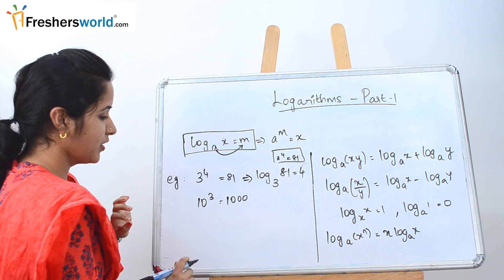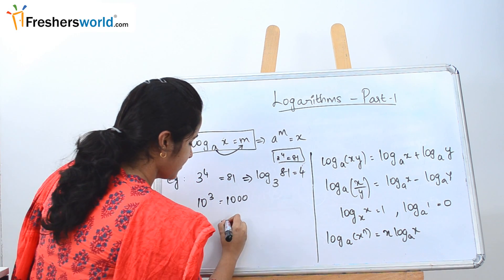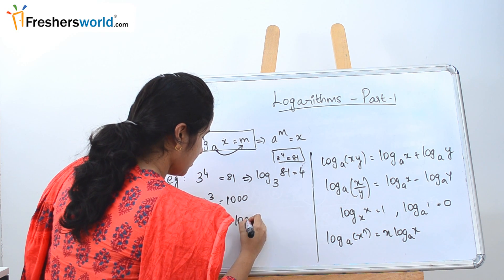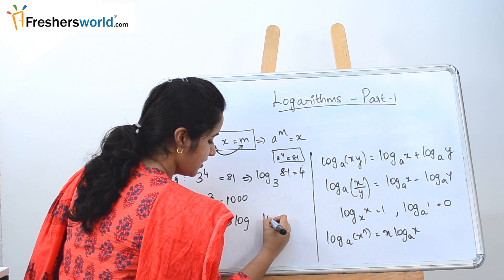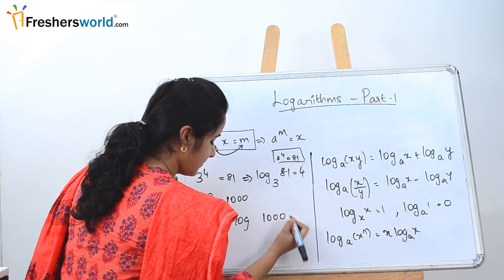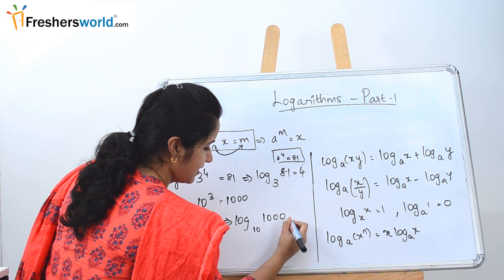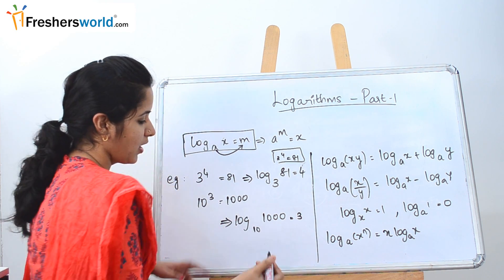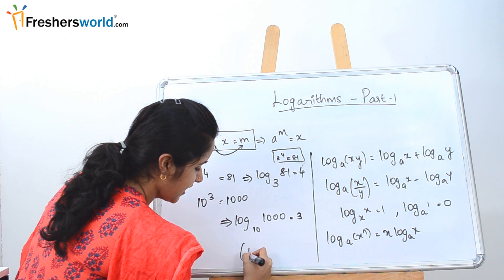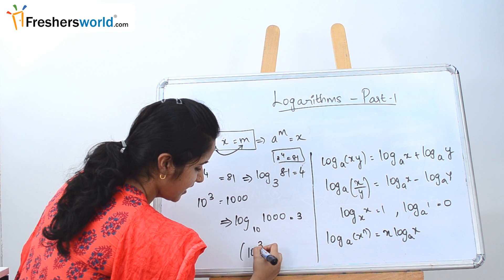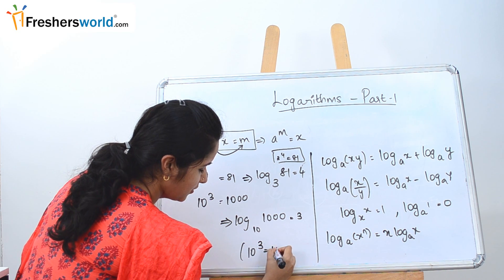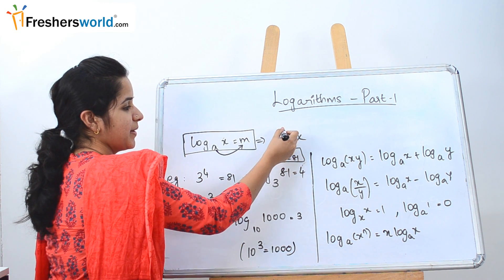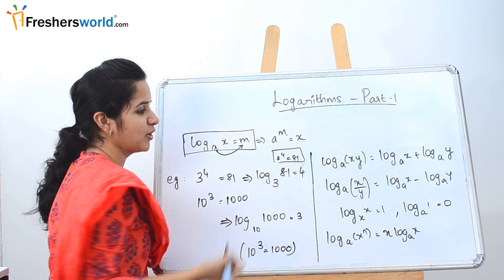Similarly, we can represent 10^3 = 1000 in log form. Log of 1000 to the base 10 is equal to 3. To recheck: 10 power 3 is equal to 1000, which is similar to a^m = x.